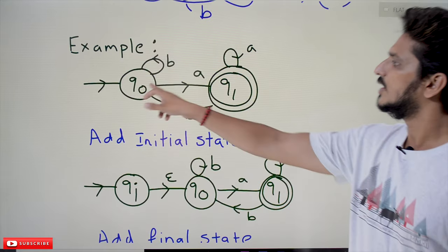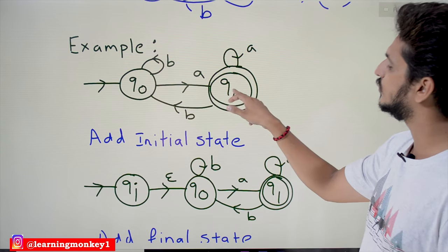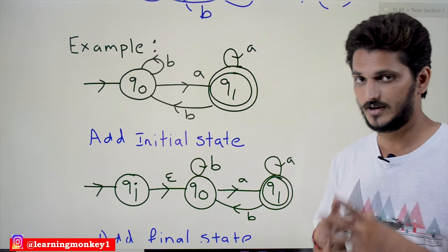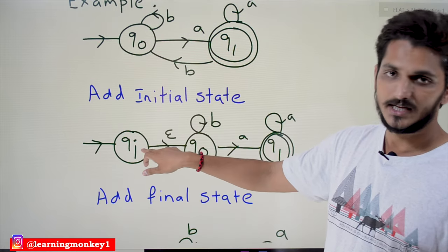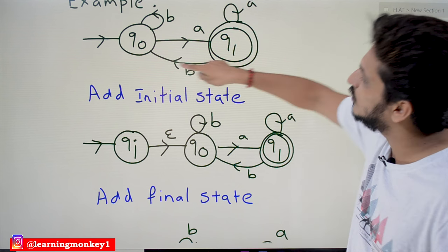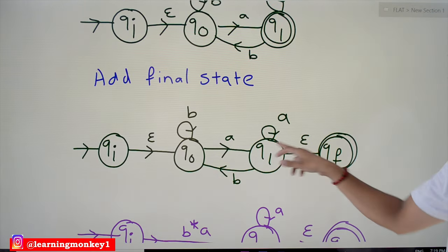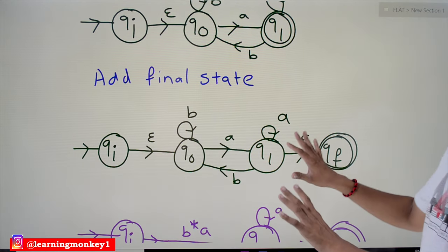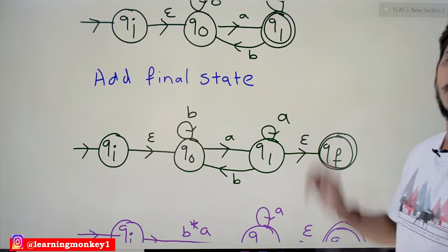Let's take our main example. Q0 is the initial state and Q1 is the final state. On B we stay on Q0; on A we move to Q1. From Q1, on A we stay on Q1; on B we move back to Q0. Following our steps: since there is an incoming edge to the initial state, we add a new initial state QI with an epsilon move to Q0. Since Q1 has an outgoing edge, we make Q1 a non-final state and add new final state QF with an epsilon move from Q1. The intermediate states to eliminate are Q0 and Q1.